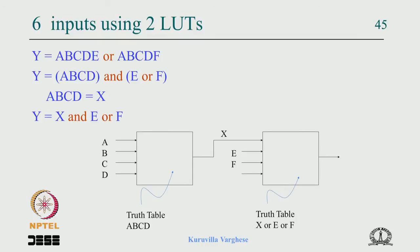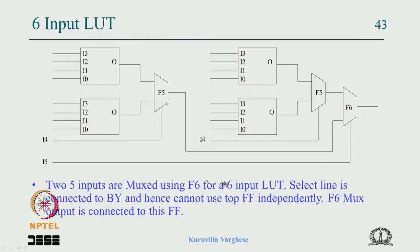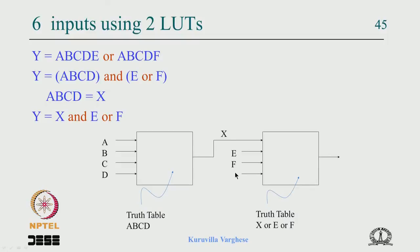It is not necessary to always use all four lookup tables. Depending on what function you are implementing you could cascade lookup tables. We have seen an example of a six-input function with inputs a, b, c, d, e and a, b, c, d, f, where there is a common product term. That is extracted into one lookup table, and its output x is cascaded with e and f to form the final output y. So even with six inputs you may not need a six-input lookup table; you could cascade four-input lookup tables.